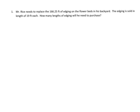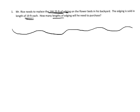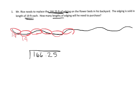Mr. Rice needs to replace the 166.25 feet of edging on the flower beds in his backyard. The edging is sold in lengths of 19 feet each. How many lengths of edging will he need to purchase? This problem is fairly straightforward — we've got 166.25 feet of edging and we're going to cut that into groups of 19, which means we're going to be dividing. So we're going to do 166.25 divided by 19 using the standard algorithm.